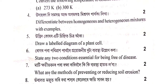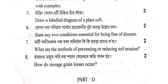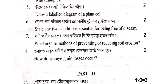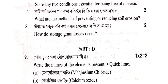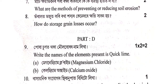Udvit kukkhor eti sinito aksitra aaka — draw a labelled diagram of a plant cell. Rugar pura poritran pabulo — proyizunye duta vivaastha uleh kora — state any two conditions essential for being free of disease. Mati khyoi bhavon-or pura rekha kori buloi — what are the methods of preventing or reducing soil erosion?